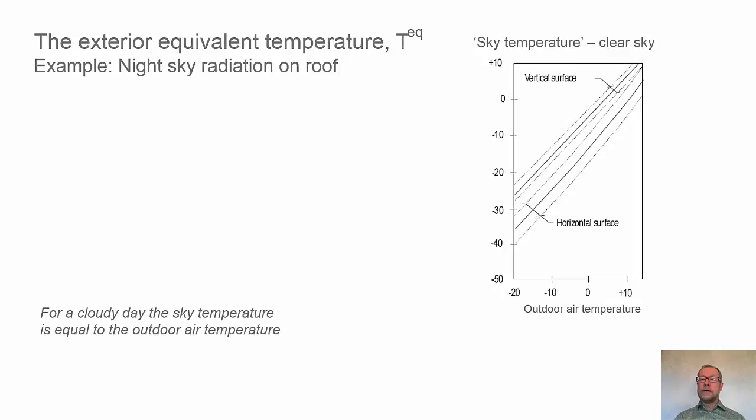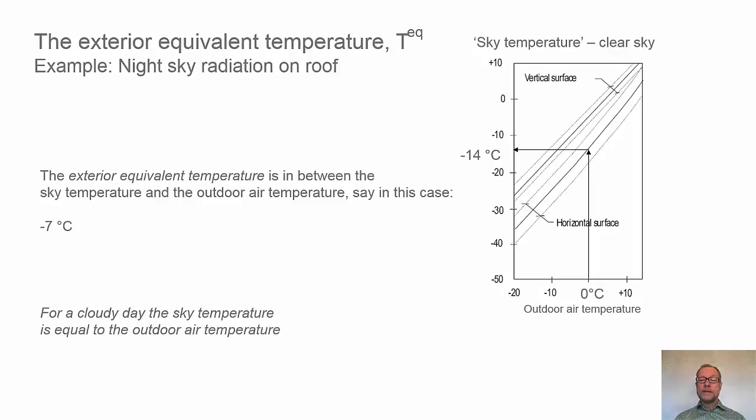Then we can go up and find vertical surface sky temperature and horizontal surface sky temperature. In general you can say if it's a very cloudy sky, the sky temperature is equal to the outdoor air temperature. So let's say the outdoor temperature is zero and then we look at a horizontal surface. We'll find out that the apparent sky temperature for clear sky would be minus 14 degrees. This is representative for upper atmospheric layers, the temperature of those upper layers.